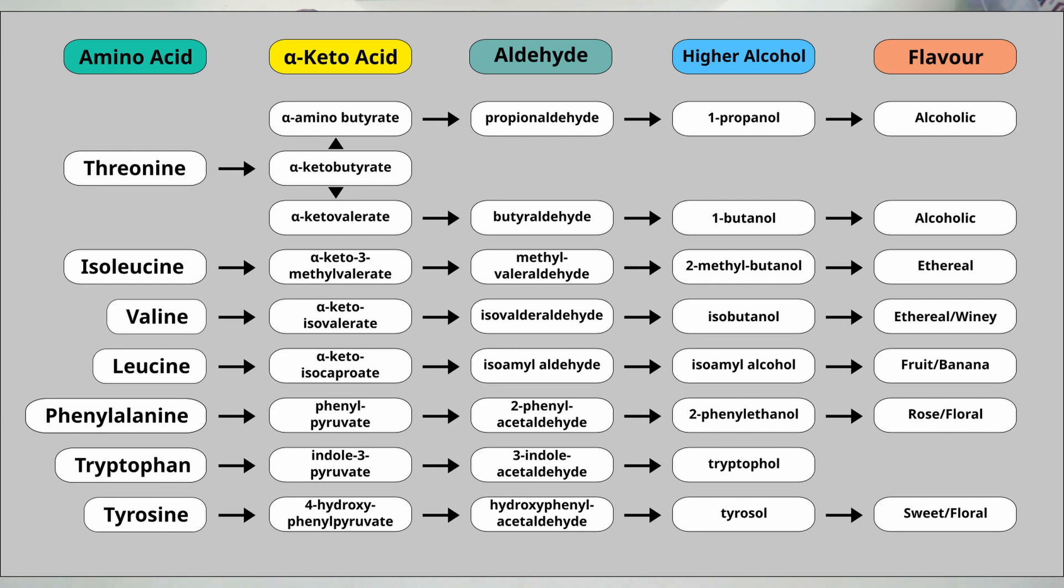The next enzyme is valine. It gets turned into alpha-keto-isovalorate, then isovaloraldehyde, then isobutanol. Again it is said to be ethereal but it also is said to be wine.